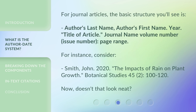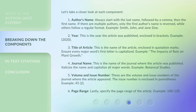For journal articles, the basic structure you'll see is: author's last name, author's first name, year, title of article, journal name, volume number, issue number, and page range. For instance, consider: Smith, John. 2020. "The Impacts of Rain on Plant Growth." Botanical Studies 45, no. 2: 100–120. Doesn't that look neat?